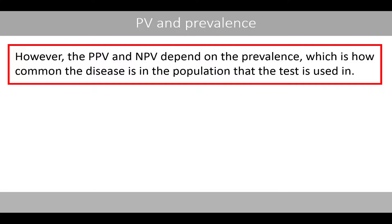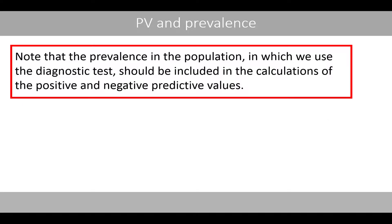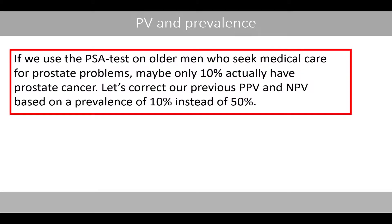However, the positive predictive value depends on the prevalence, which is how common the disease is in the population that the test is used in. In our previous example, we used the prevalence in our sample, which was 50% because we selected seven individuals with prostate cancer and seven healthy controls. Note that the prevalence in the population in which we use the diagnostic test should be included in calculations of the positive and negative predictive values. If we used the PSA test on older men who seek medical care for prostate problems, maybe only 10% actually have prostate cancer.